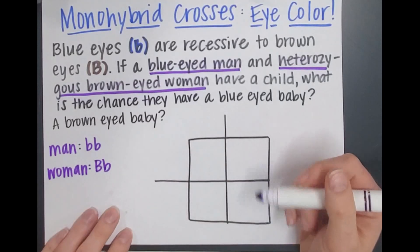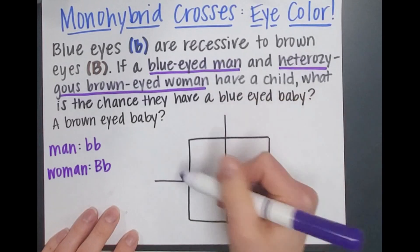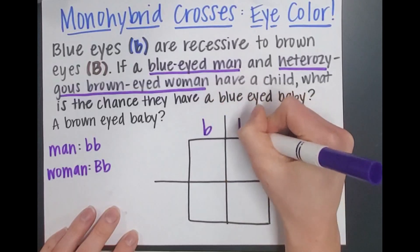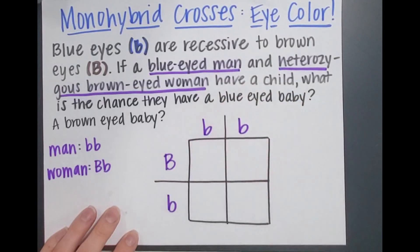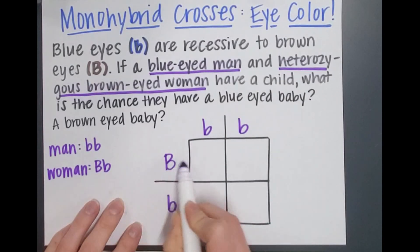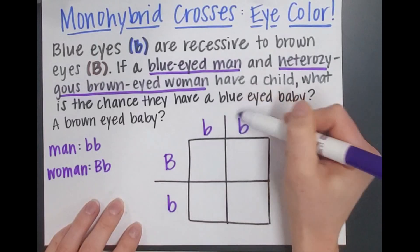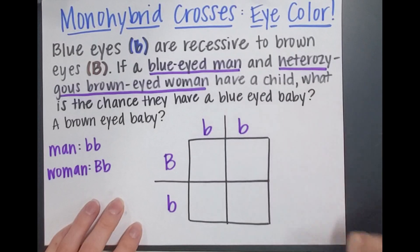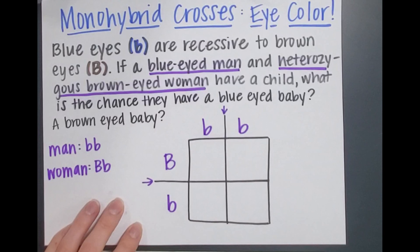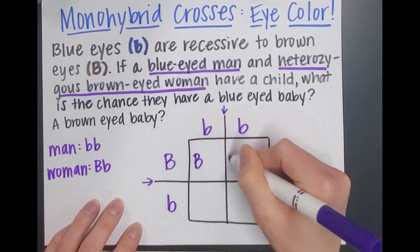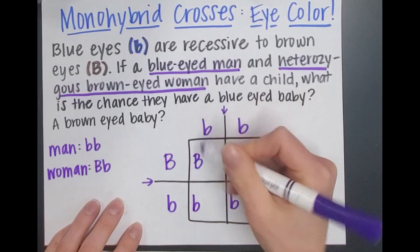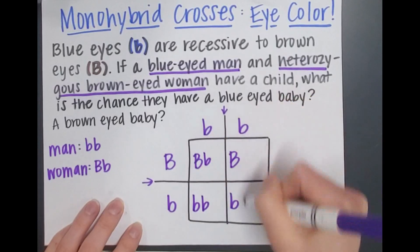Now we're going to go ahead and fill out our Punnett square. We'll put one of the parents across the top and the other parent across the side — it doesn't matter which is which. Things on the side move across the Punnett square, and the two alleles on the top move down. I can put little arrows to remind me which direction they go. So big B comes across, little b comes across, and then each little b moves down.